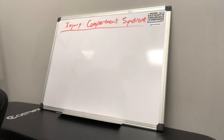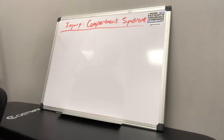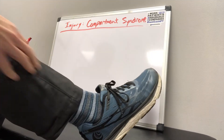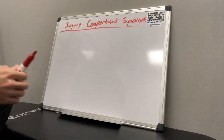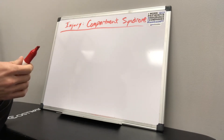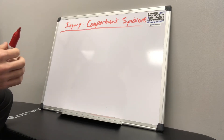Compartment syndrome is essentially a swelling that happens inside of a compartment of the lower leg — specifically in this runner's case, it was in the anterior compartment of the lower leg, right around the shin area. A lot of people can confuse this as shin splints, and that was the original thought: was it shin splints, was it tendonitis, or something like that?